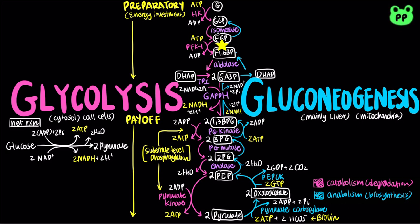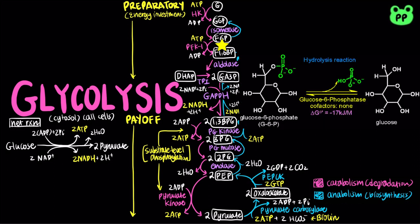The second glycolytic reaction that needs to be bypassed is the phosphorylation of fructose-6-phosphate by PFK1. The generation of fructose-6-phosphate from fructose-1,6-bisphosphate is catalyzed by fructose-1,6-bisphosphatase-1, or FBPase-1, which hydrolyzes the carbon-1 phosphate of fructose-1,6-bisphosphate.